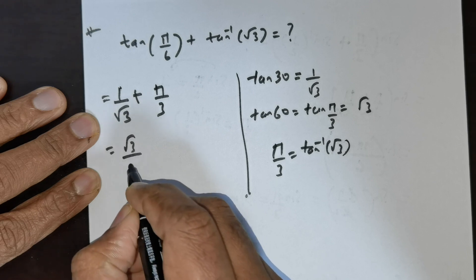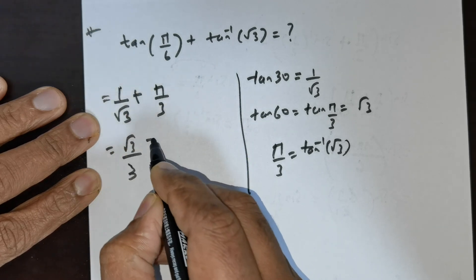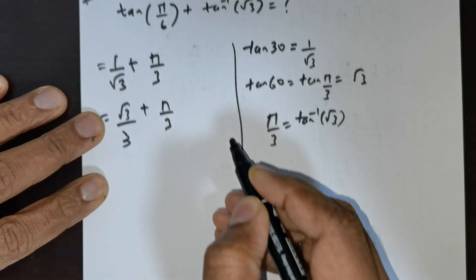This is going to be rewritten as root of 3 divided by 3, because you multiply by root 3 divided by root 3, and then you retain pi over 3.